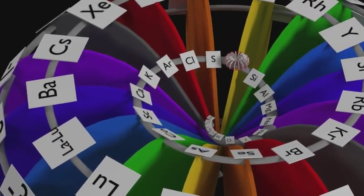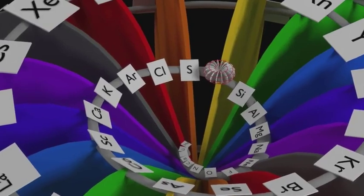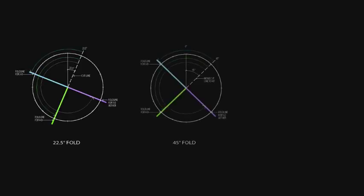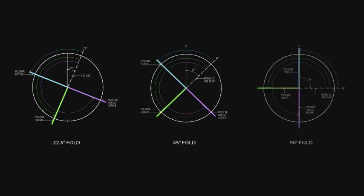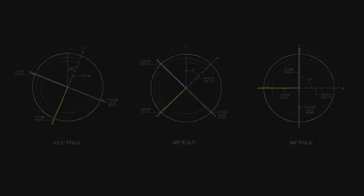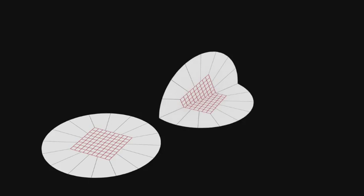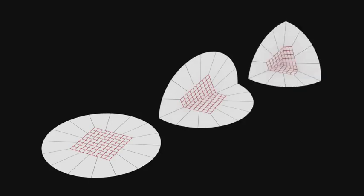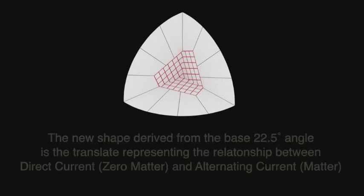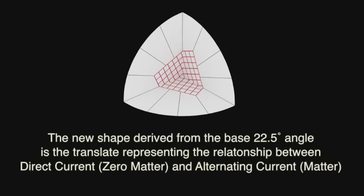The octave model, which represents one-eighth of a sphere, visualizes the musical octaves, the relationship to their crystal forms, and their 22.5 degree primary, 45 degree secondary, and 90 degree tertiary spatial-dimensional relationships. The octave model, when folded, demonstrates the alteration of the area-time volume as it metamorphoses from the high charge density fifth dimension to the low charge density first dimensional base. The new shape derived from the base 22.5 degree angle is the translate representing the relationship between direct current, which is zero matter, and alternating current, which is matter.